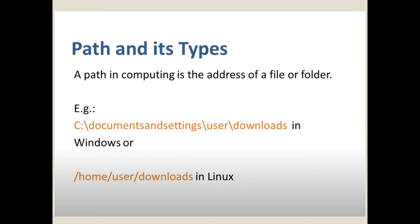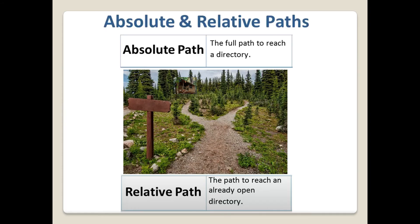A path in computing is the address of a file or folder — for example, 'C:\Documents\Settings\User\Downloads' in Windows, or '/home/user/Downloads' in Linux. There are two types of paths: absolute path and relative path.